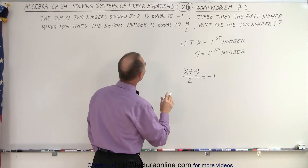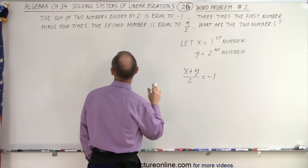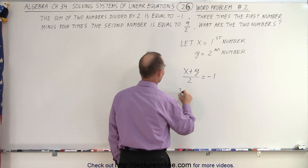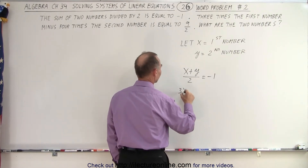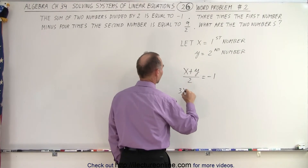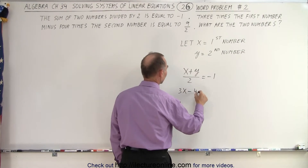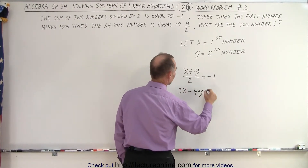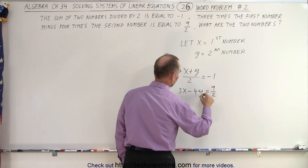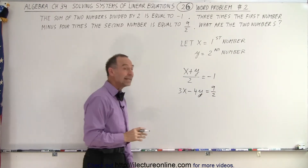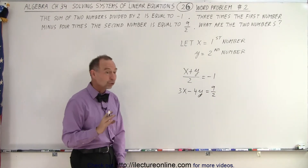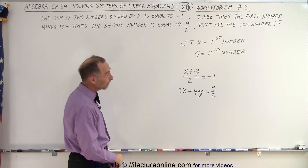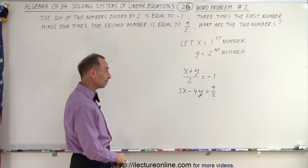3 times the first number minus 4 times the second number — so, 3 times the first number x minus 4 times the second number y is equal to 9 over 2. Now we have those two equations, and we need to solve them simultaneously.